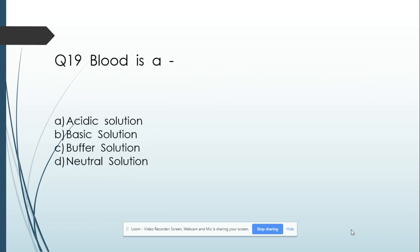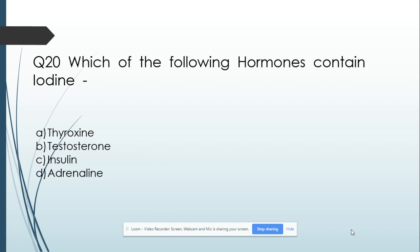Question number 19: Blood is — Option A: Acidic solution. Option B: Basic solution. Option C: Buffer solution. Option D: Neutral solution. And its answer is Buffer solution. Question number 20: Which of the following hormones contains iodine? Option A: Thyroxine. Option B: Testosterone. Option C: Insulin. Option D: Adrenaline. And its answer is Thyroxine.